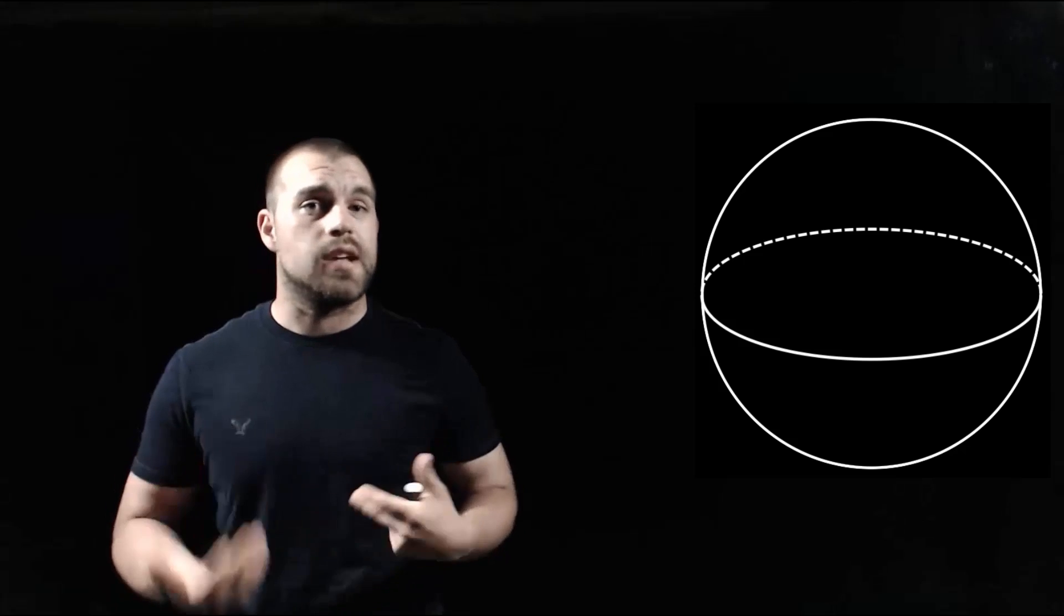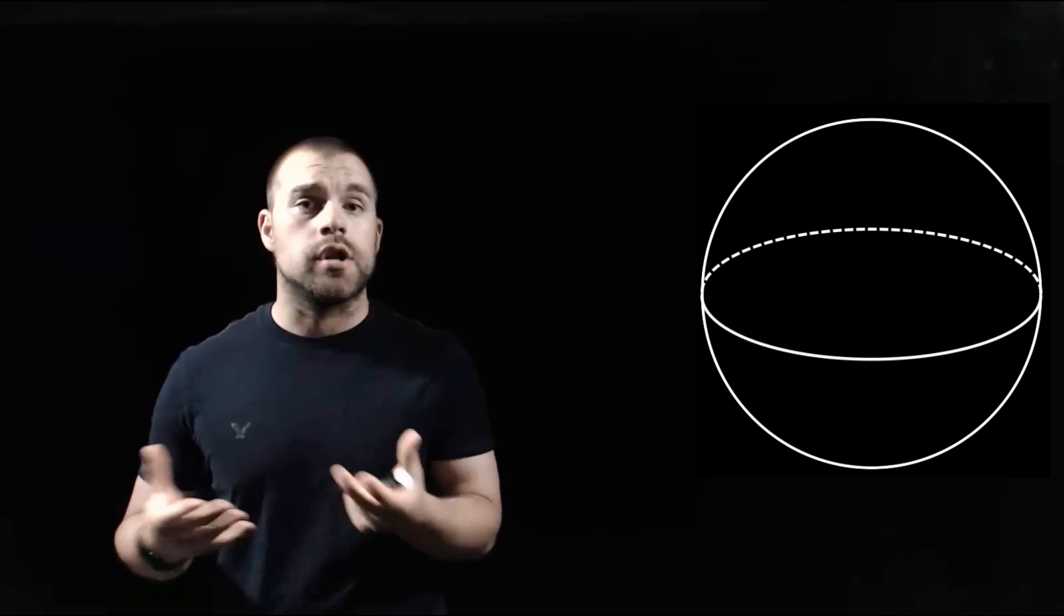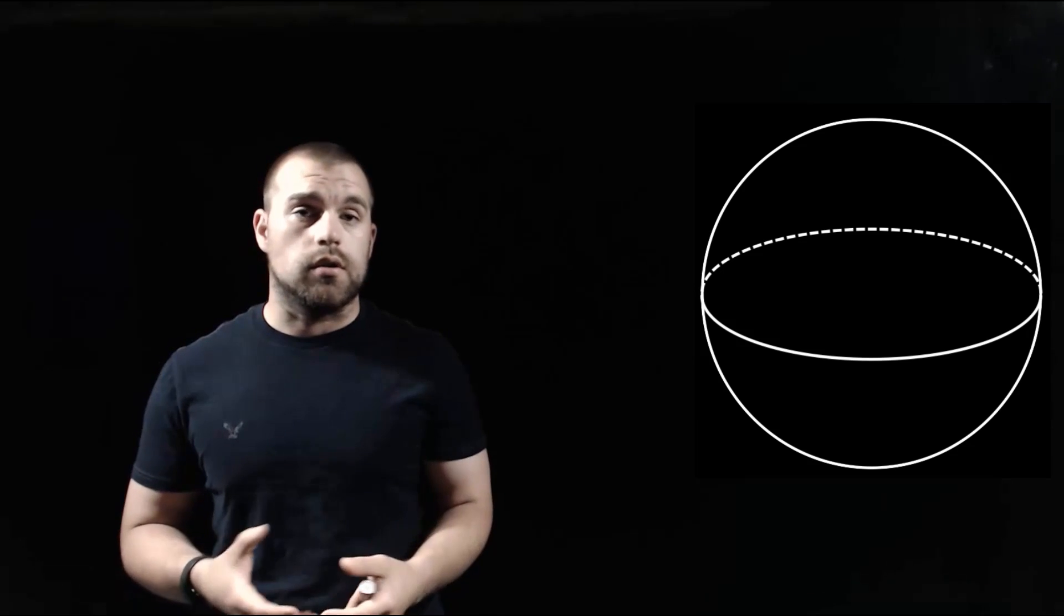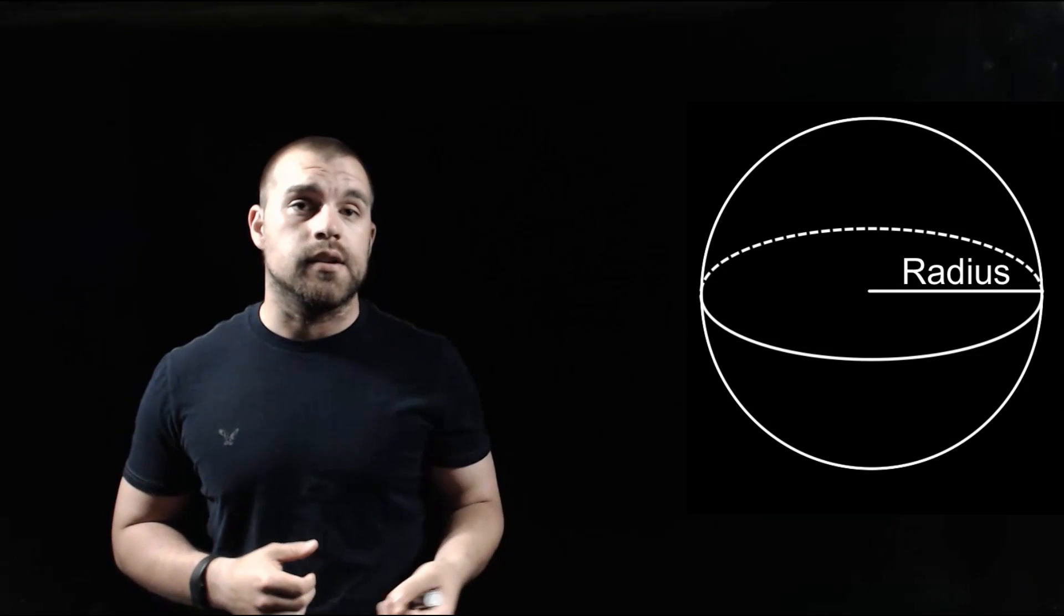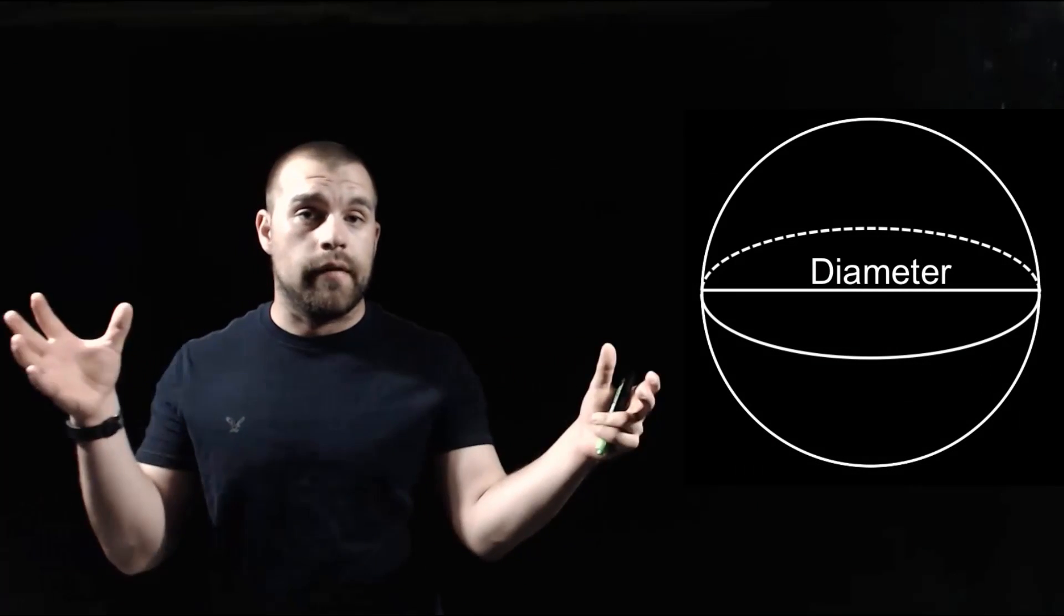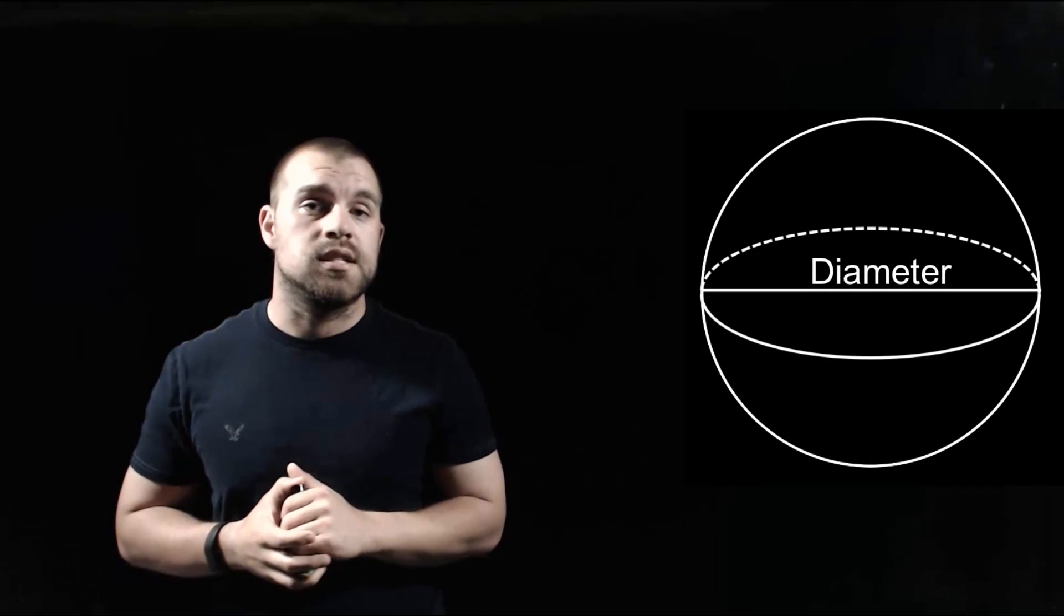As we're looking at a sphere, what we're essentially looking at is like a 3D version of a circle, a ball-shaped object. Just like circles, a sphere has a radius which runs from the center out to the edge, and diameters that run the full length all the way across a sphere.